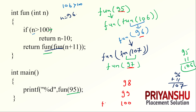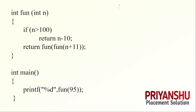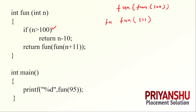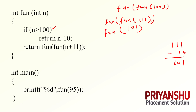Let us check directly for function(100). function(100): condition is false, returns function(function(100 + 11)) = function(function(111)). function(111): 111 > 100, returns 111 - 10 = 101. function(101): 101 > 100, returns 101 - 10 = 91. So function(100) returns 91. And going back, the final answer for function(95) is 91.